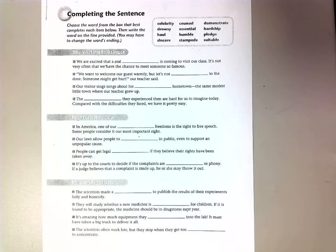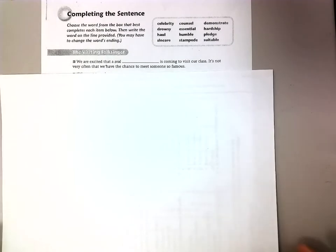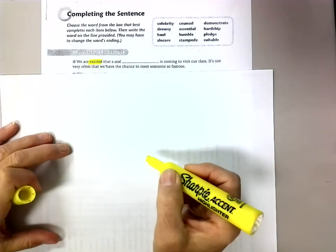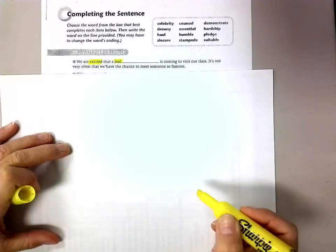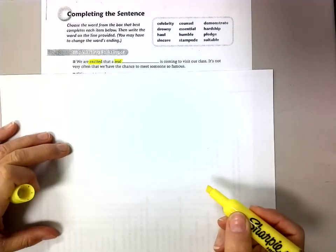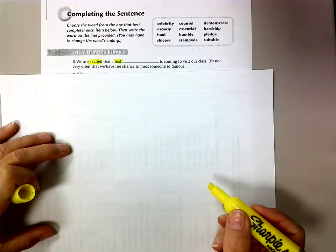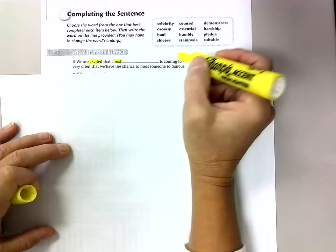So what I'm going to do is I'm just going to put a line or a paper over top so we're only looking at one sentence at a time. So the first thing I'm going to do is I'm going to use a highlighter and I'm going to highlight some of the important things that might help me figure out what word would best go in that spot. So it says we are excited. So this must be a good experience. I'm excited that a real, that means it can't be anything made up. So I'm going to highlight real, is coming to visit our class. So it has to be someone that's real that's coming to visit.